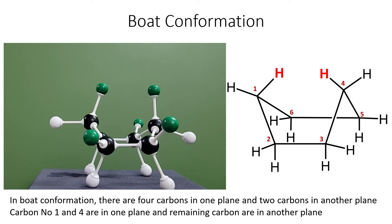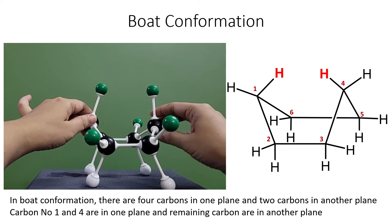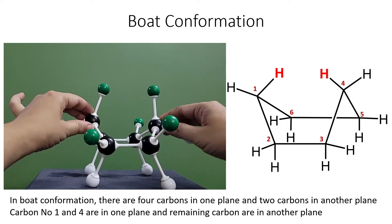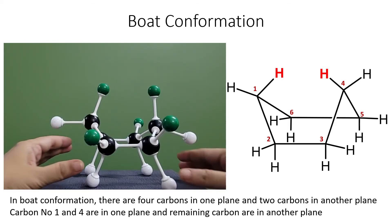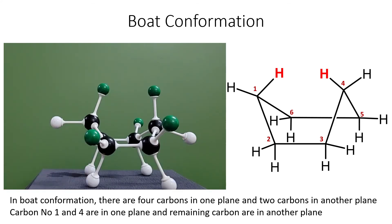In the boat conformation, all carbons are not in one plane. If carbon one and carbon four are in one plane and the remaining carbons are in another plane, a boat-like shape is formed.